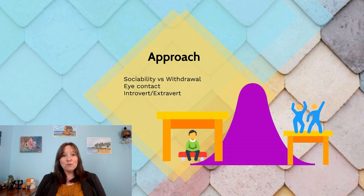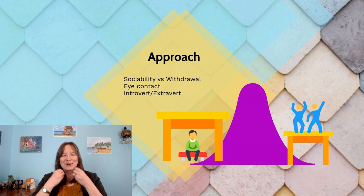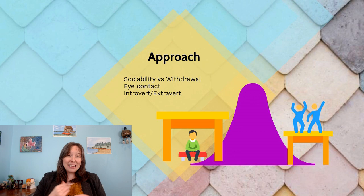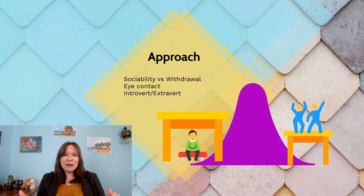The seventh dimension is approach, which overlaps greatly with sociability. A child high in sociability makes more eye contact right from the outset, approaches more people, has social smiles early in infancy, makes more friends at school. The more withdrawn child may be interested in people but at a distance — they're more the watchers, or when new people are around, they may actively hide and withdraw. This dimension exists on a spectrum.